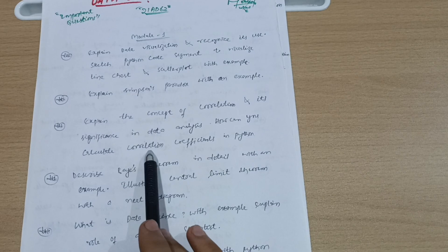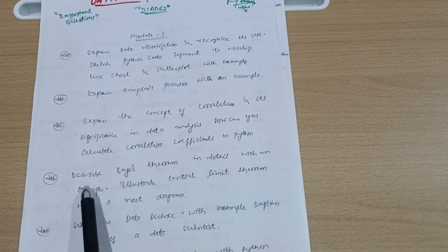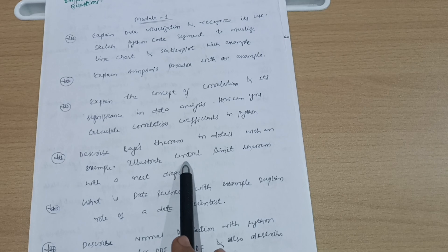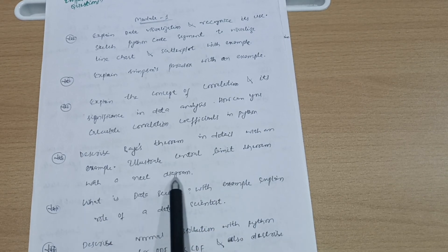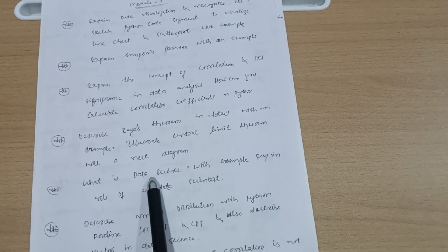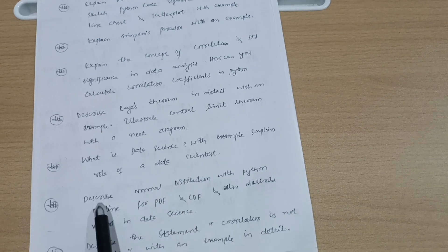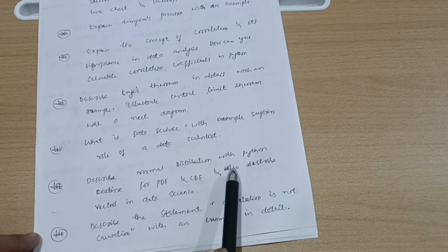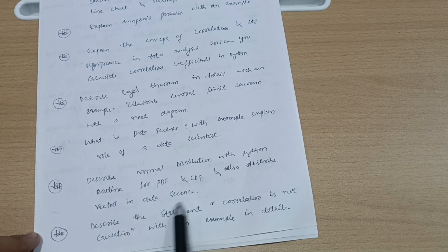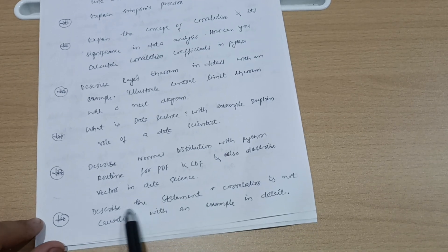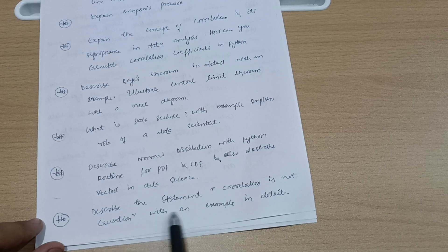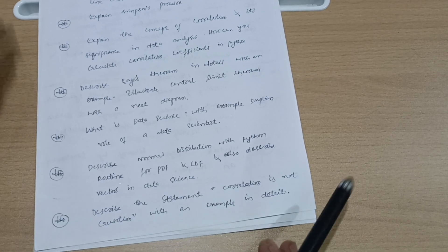How can you calculate correlation coefficients in Python? Describe Bayes' theorem in detail with an example and also illustrate central limit theorem with a neat diagram. What is data science with example? Explain role of a data scientist. Describe normal distribution with Python routine for PDF and CDF and also describe vectors in data science. Last question from module 1: describe the statement 'correlation is not causation' with an example in detail.